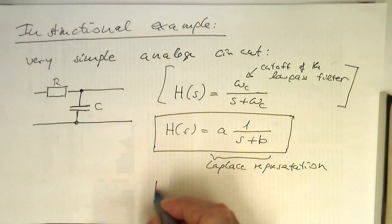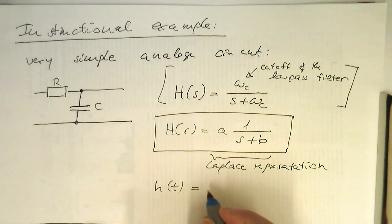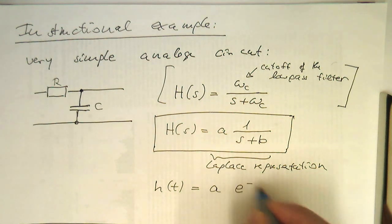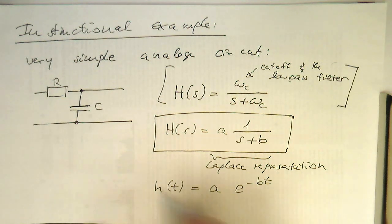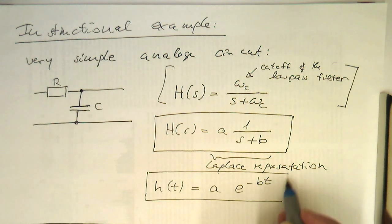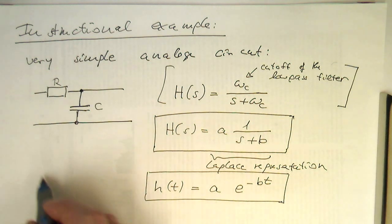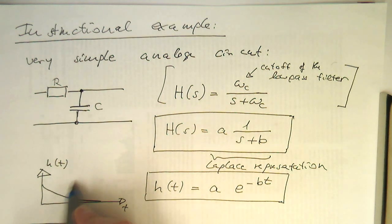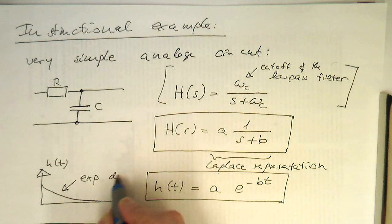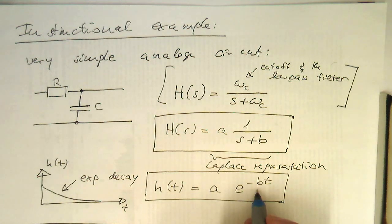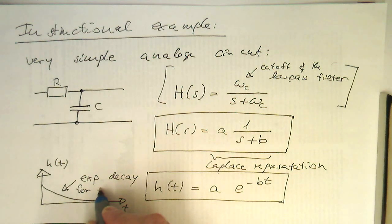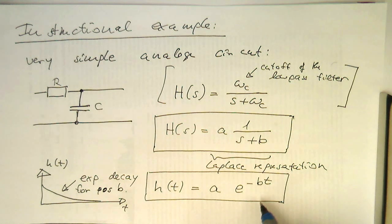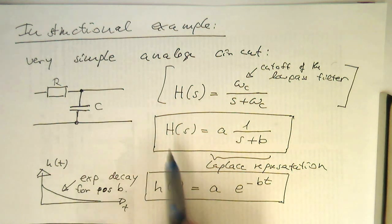The time domain reaction in continuous time is H of T, and this is just A times e to the minus B T. Depending on this B here, we are getting different decay rates. That's what we are expecting from a low-pass filter. So that's T, that's our H of T, and the impulse response will be something like an exponential decay here — obviously, as long as B is positive. So that's our Laplace transform of this H of T, inspired by our low-pass filter.